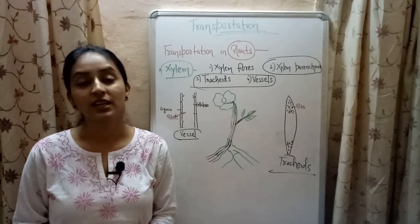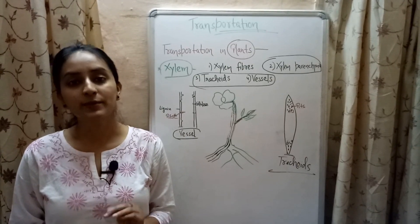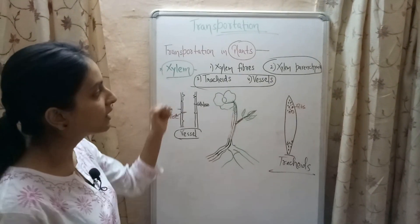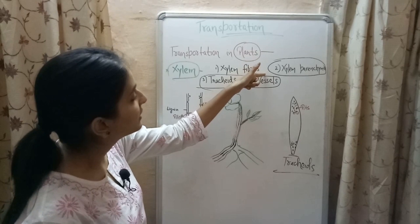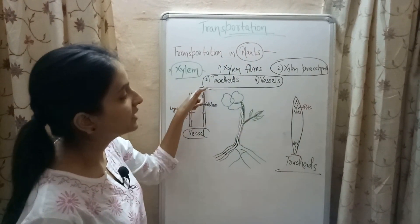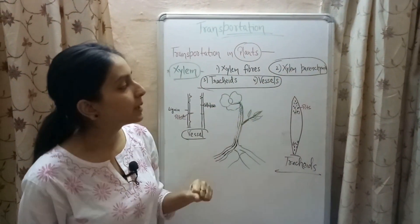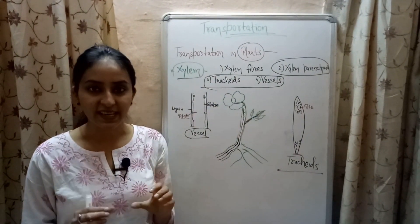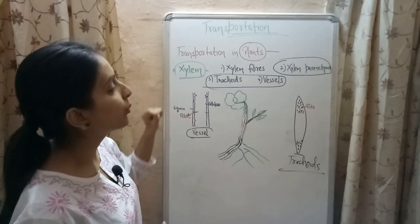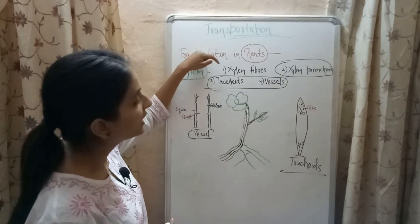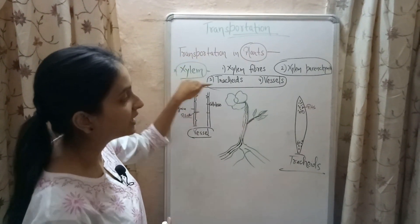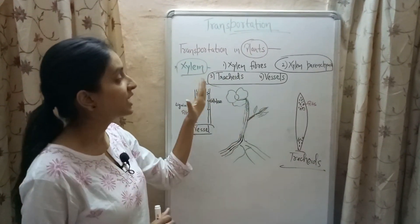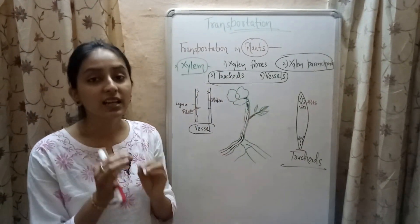Xylem helps in carrying water and minerals in a plant. There are four types of cells present in xylem tissue: xylem fibers, xylem parenchyma, tracheids, and vessels. Xylem parenchyma is the only living component of the xylem tissue; the rest — xylem fibers, tracheids, and vessels — are dead.